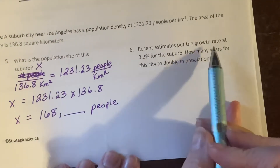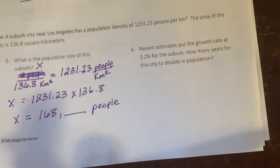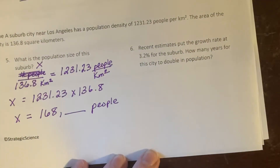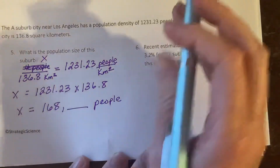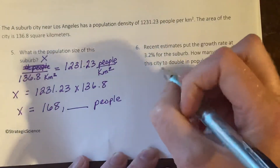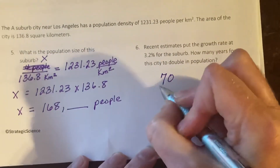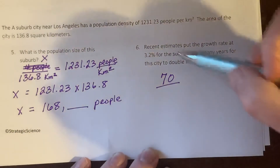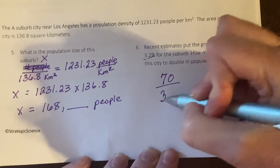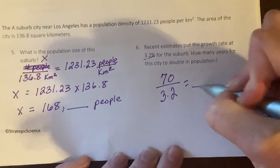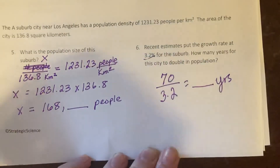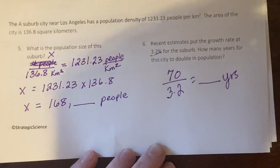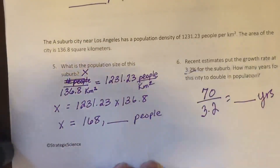Recent estimates put the growth rate at 3.2% for the suburb. How many years will it take to double? Lots of people are moving in and lots of homes are being built. Using the Rule of 70, our growth rate is 3.2%, and we come out with a number of years. Finish up the problems and turn in your work.